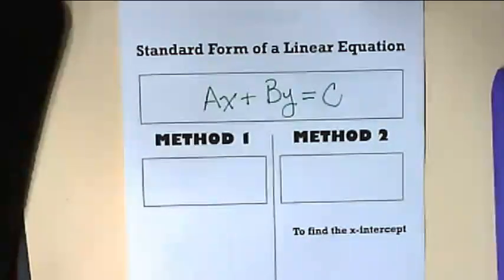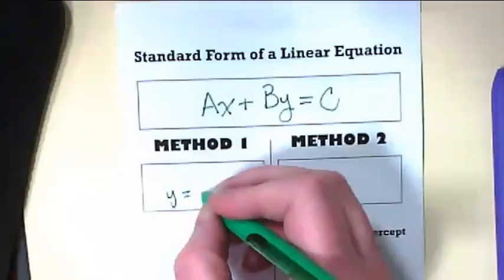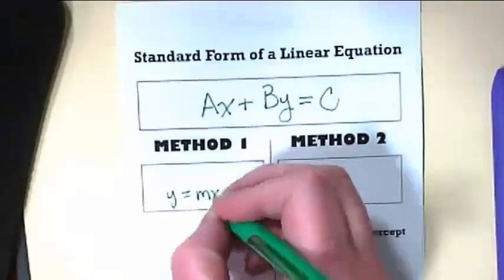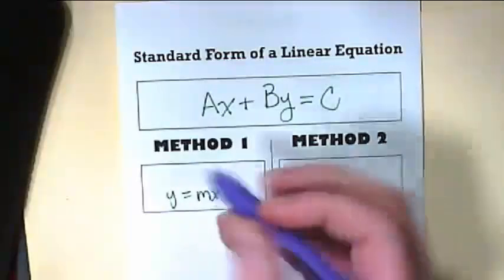In y equals mx plus b, the m is the slope and the b is our y-intercept.